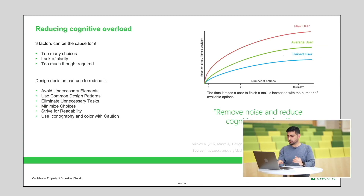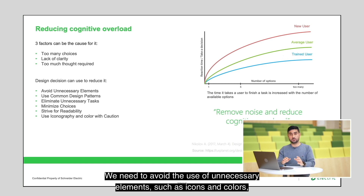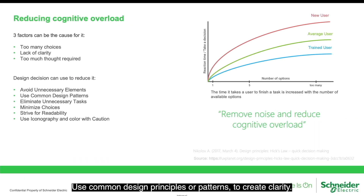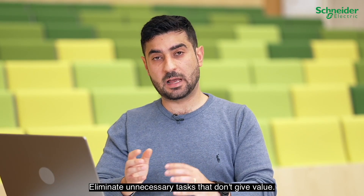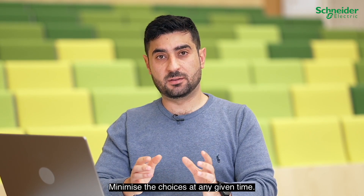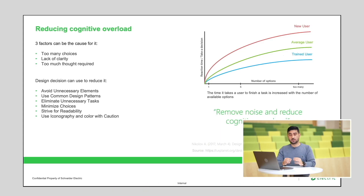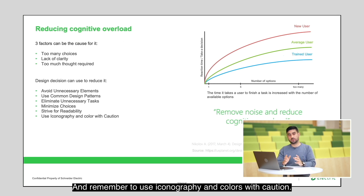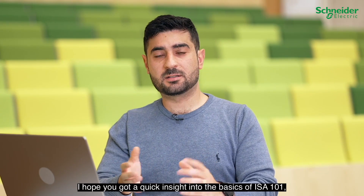So what can we do as designers to reduce this? We need to avoid the use of unnecessary elements such as icons and colors. Use common design principles or patterns to create clarity. Eliminate unnecessary tasks that don't give value. Minimize the choices at any given time. Strive for readability when using typography — use easy, readable typography. And remember to use iconography and colors with caution.